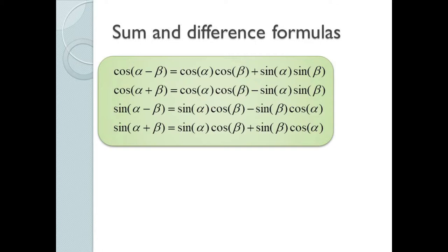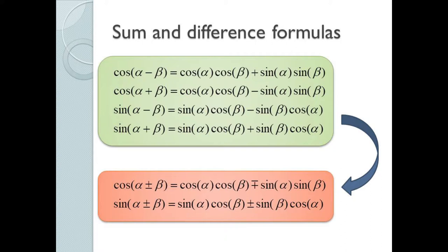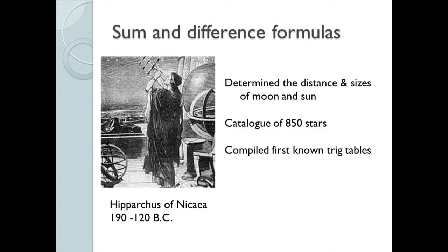The actual formulas are shown here. We usually condense the four equations into the two shown below in red. These were originally derived by Hipparchus of Nicaea back around 150 B.C. Hipparchus was an amazing astronomer who, among other things, compiled one of the first trig tables, determined the approximate distance to and size of the Sun and the Moon, and created a catalog of over 850 stars.